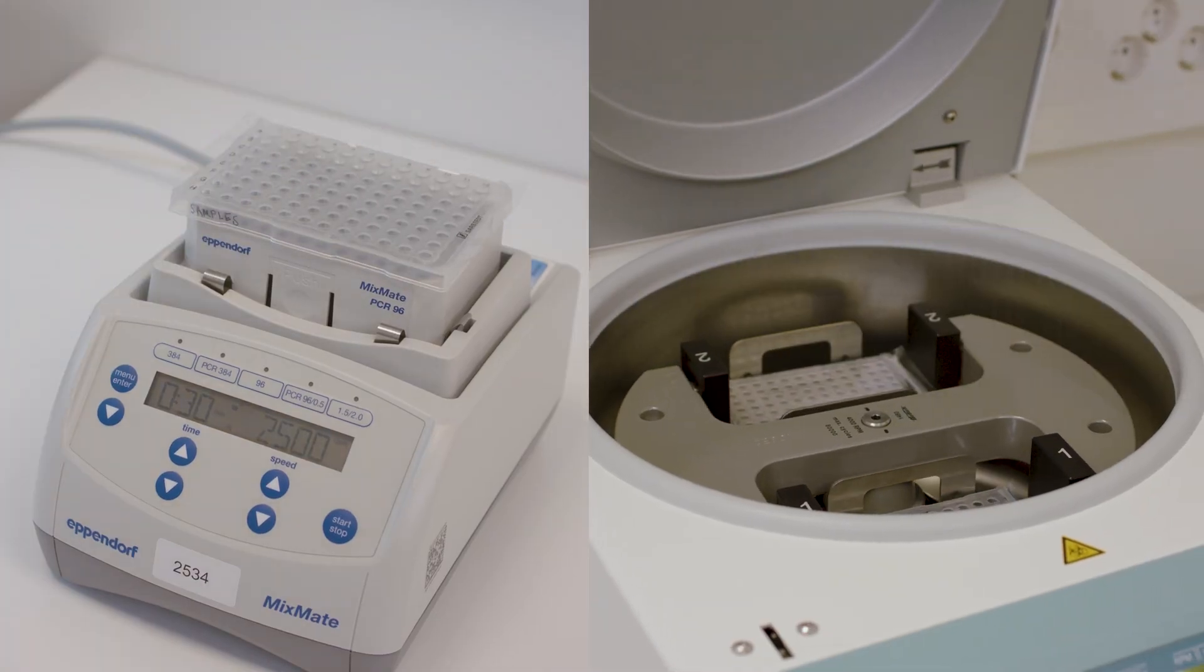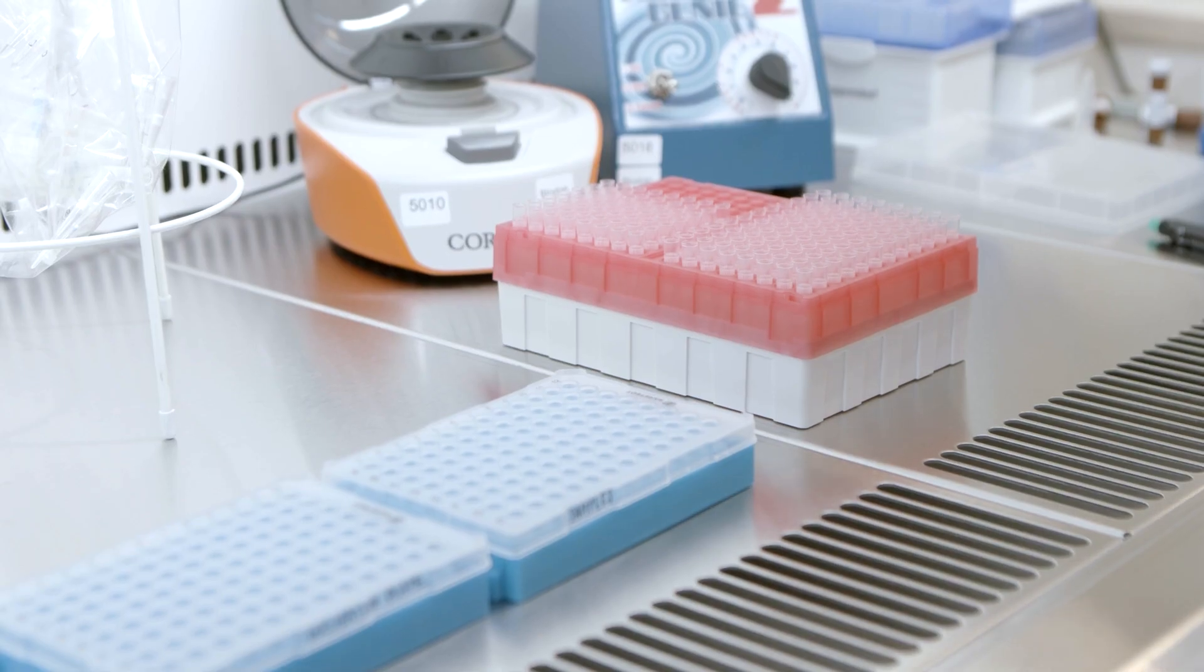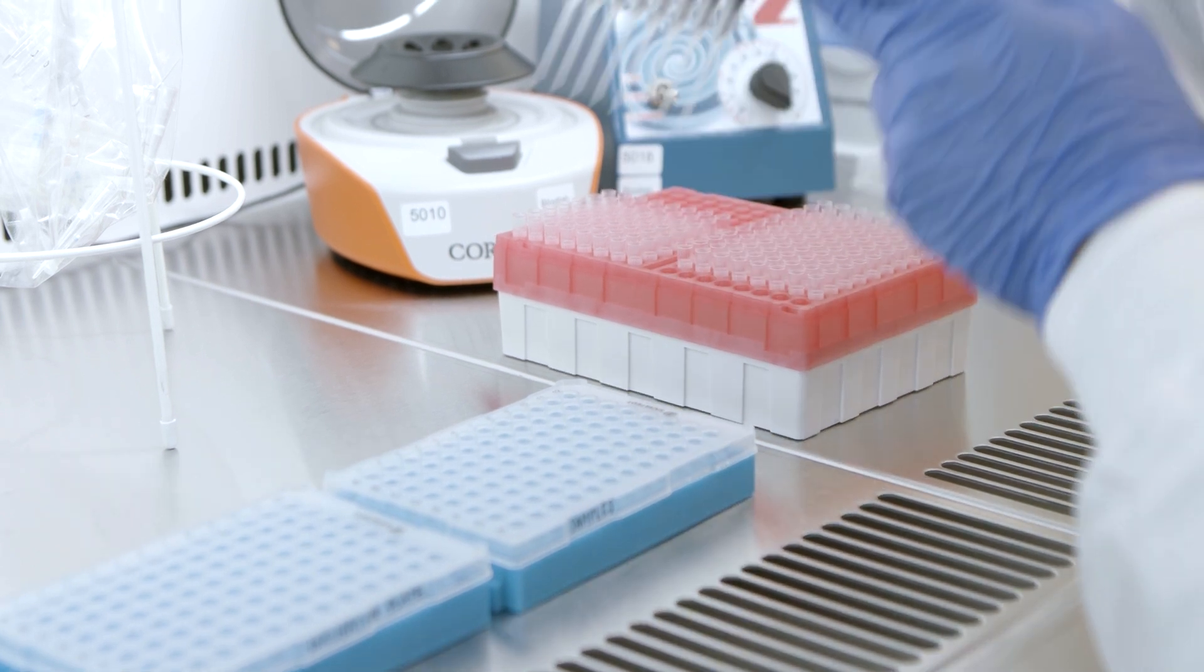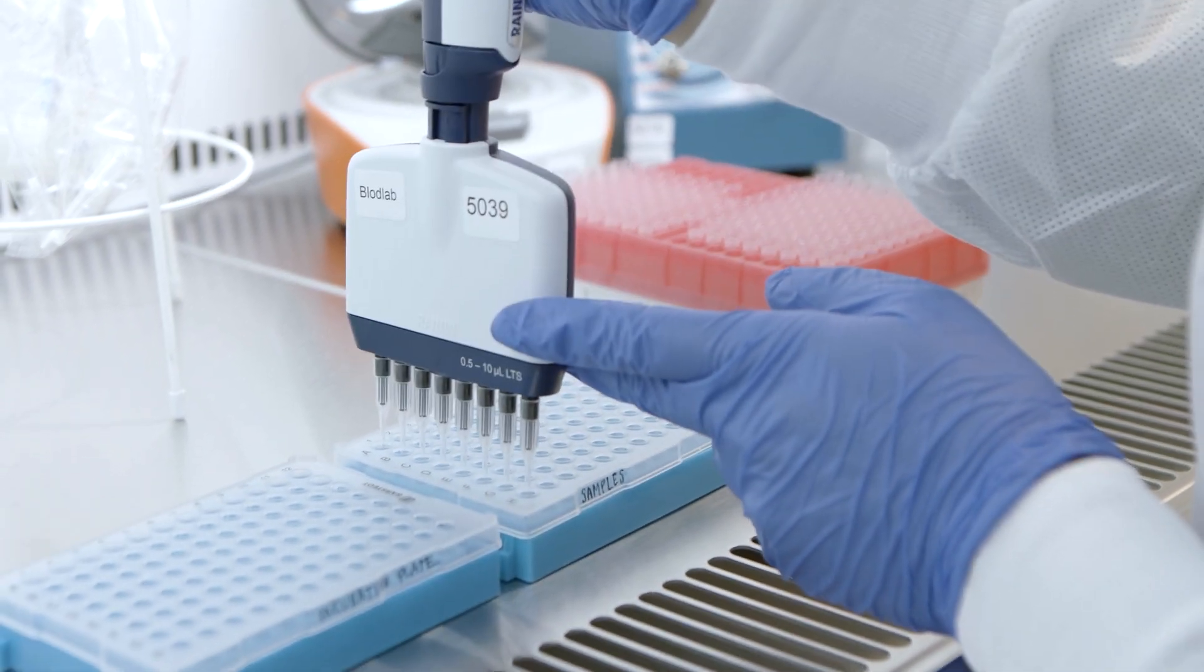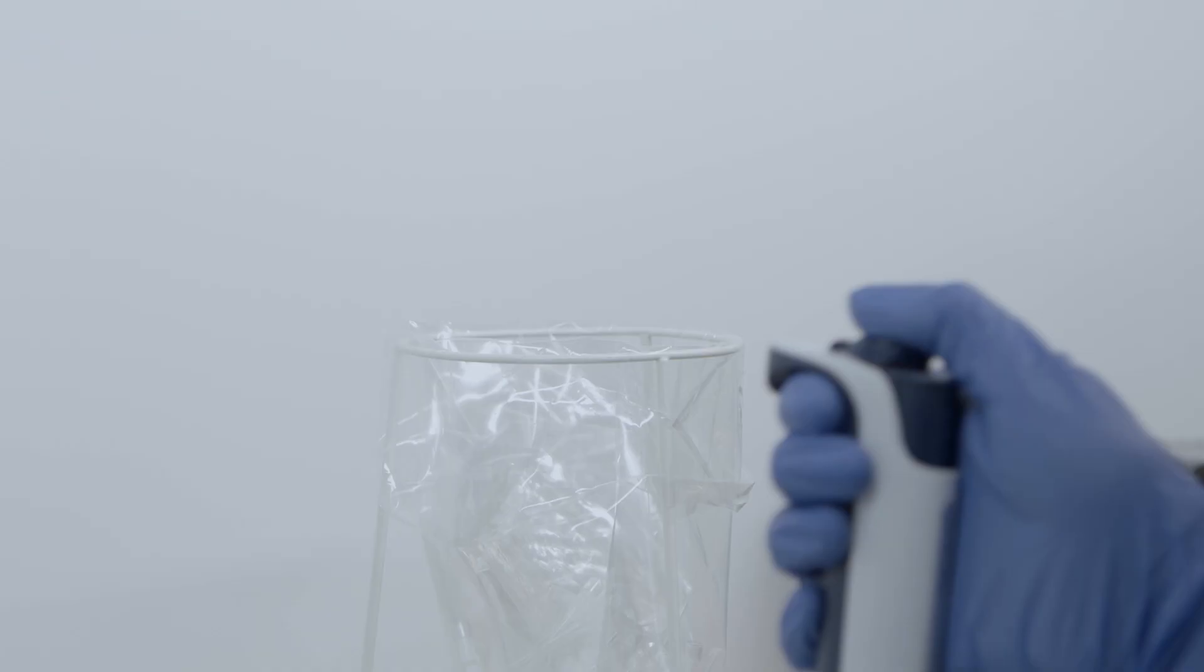Vortex the samples and spin them down. Transfer 1 microliter of each sample to the bottom of each well of the incubation plate, according to your sample plate layout, using a multichannel pipette and forward pipetting. Make sure to change tips between the columns.